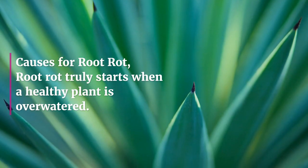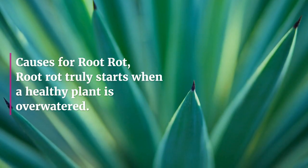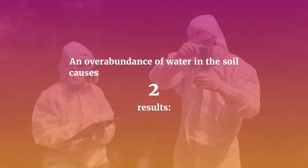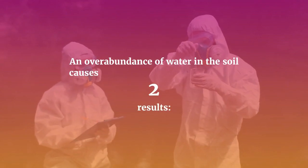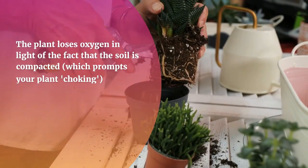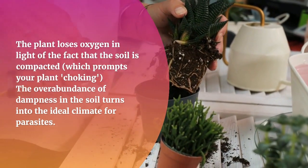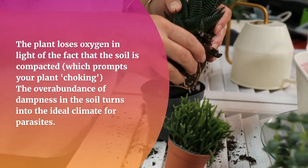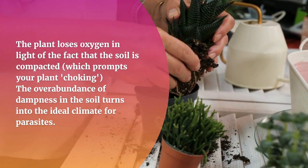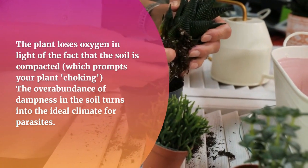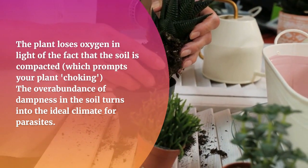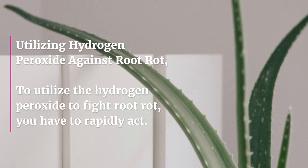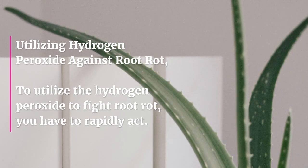Root rot truly starts when a healthy plant is over-watered. An overabundance of water in the soil causes two results: the plant loses oxygen because the soil is compacted, which prompts the plant to choke, and the excess dampness in the soil turns into the ideal climate for parasitic fungal growth.